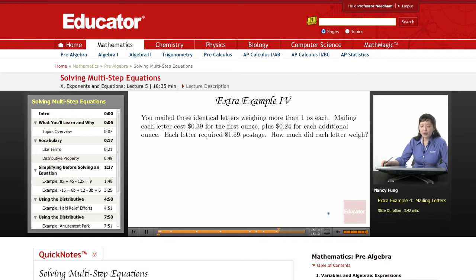Alright, so there is some extra information here that we don't need to know about. It says that each letter required $1.59 postage, and they're talking about mailing three letters. Well, we don't really need to know about all three letters. We only need to know about one letter, because we're really only looking for the total of one letter. So I'm just going to think about one letter. I don't need to worry about all three.